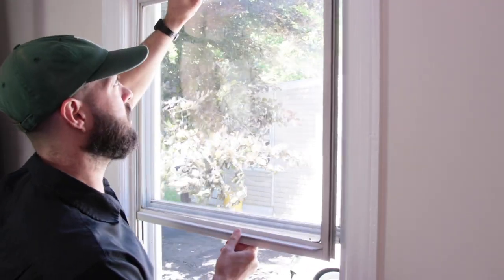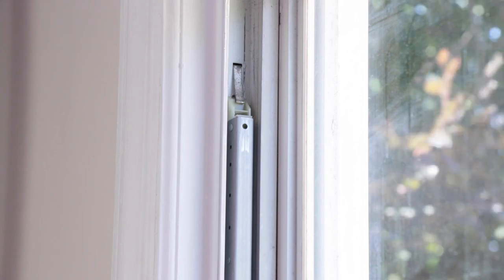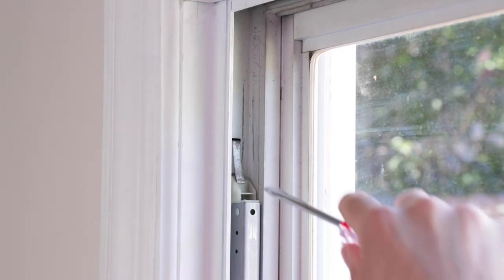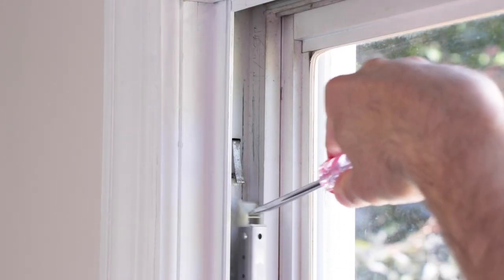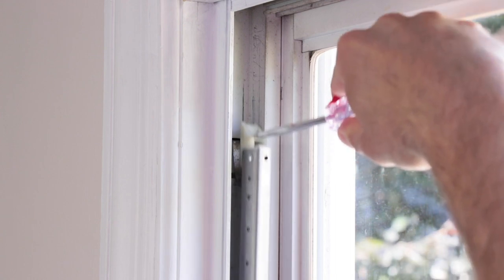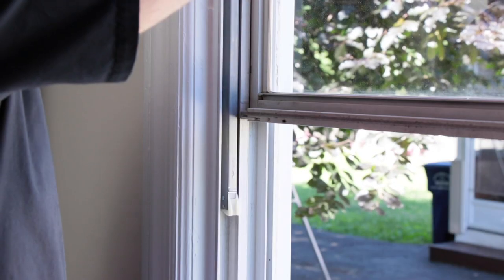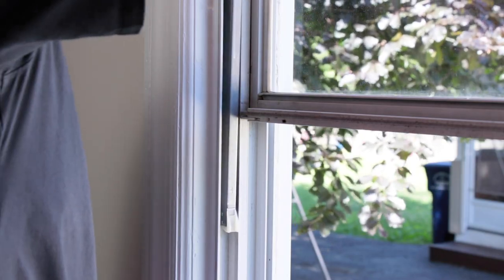The top attachment from the balances will catch on the takeout clip leaving the channel balance in the window frame. To remove the channel balance, just press down on the top attachment and remove it from under the takeout clip. Push the channel balance down and pull back.